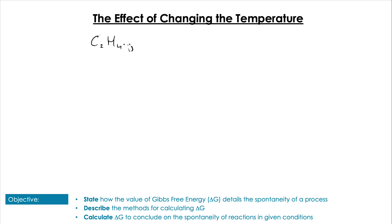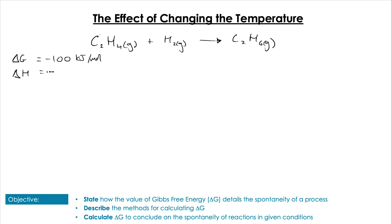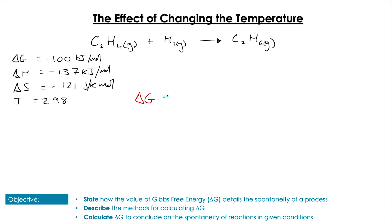Changing the temperature does have an effect on the value of ΔG and therefore the spontaneity of a reaction. Looking at the equation we've used: ΔG = −100 kJ/mol, ΔH = −137 kJ/mol, and ΔS = −121 J/K/mol at 298 K. If we increase temperature, the T·ΔS term becomes larger; since both ΔH and ΔS are negative, at low temperatures ΔG is negative, but as T increases, the value becomes more positive because the −TΔS term grows and can overcome ΔH.